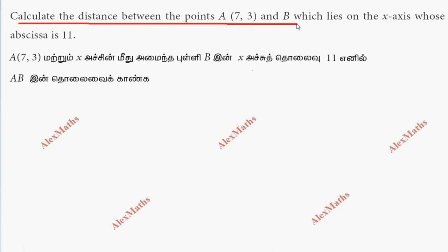Point A coordinate is (7,3). But point B has a condition. It lies on the x-axis.